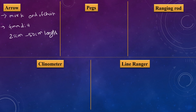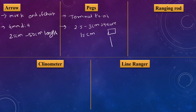The length of the arrow is 25 cm to 50 cm. The next instrument is the peg, which is made of wooden material. The peg marks the position of stations or terminal points. The cross-section of the peg is 2.5 to 3 cm square and its length is 15 cm.